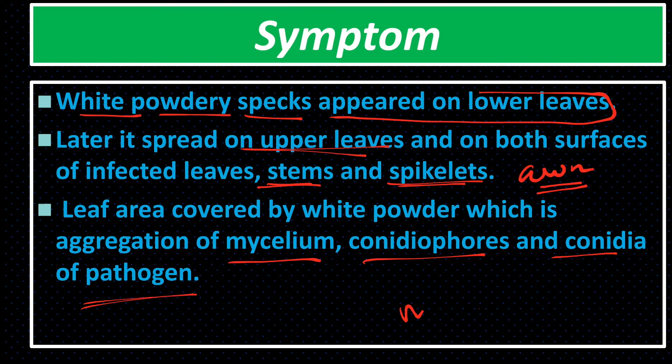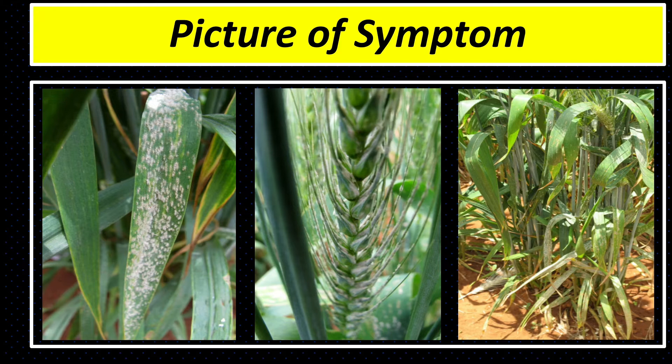In infected plants, the size of the grains is reduced and yield is also reduced. The symptoms of powdery mildew are very easy to identify.